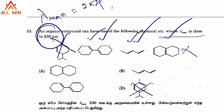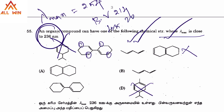For a heteroannular diene, using Woodward-Fieser rules: the base value is 214 nm. There are 4 ring residues, each contributing 5 nm, giving 4 × 5 = 20 nm. So the calculated lambda max is 214 + 20 = 234 nm, which is very close to 236 nm. This matches option C.